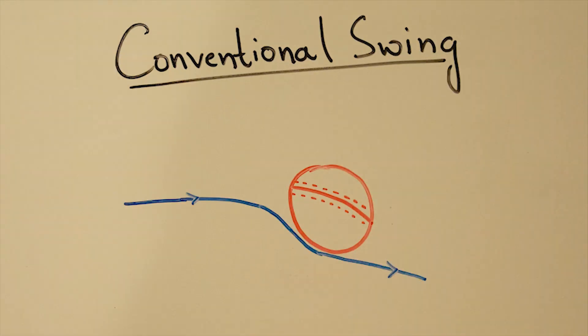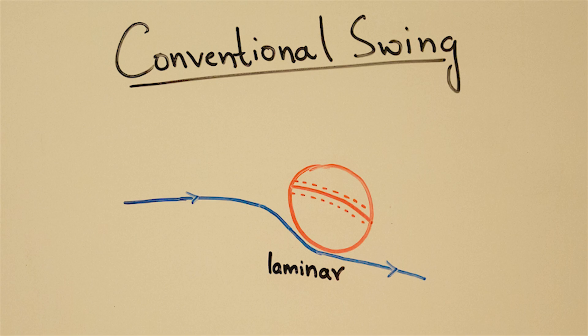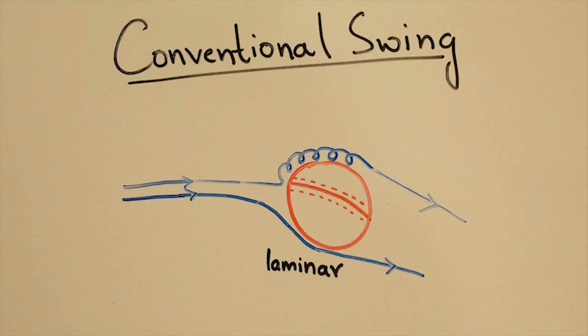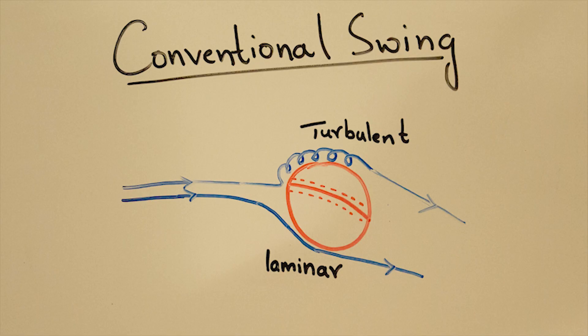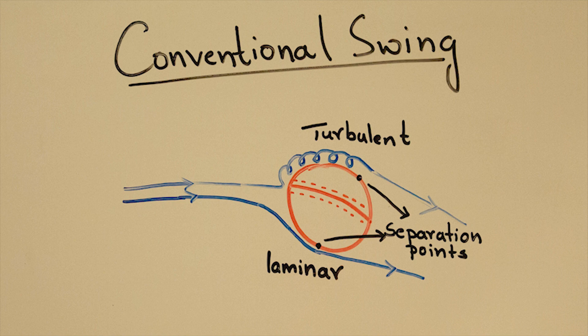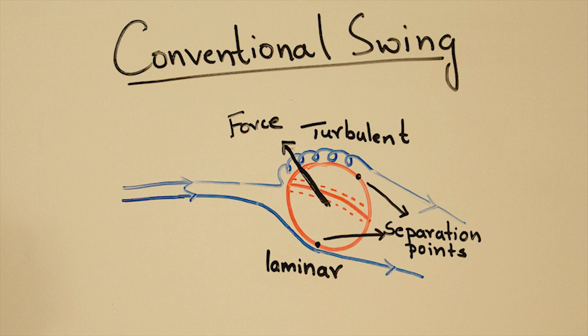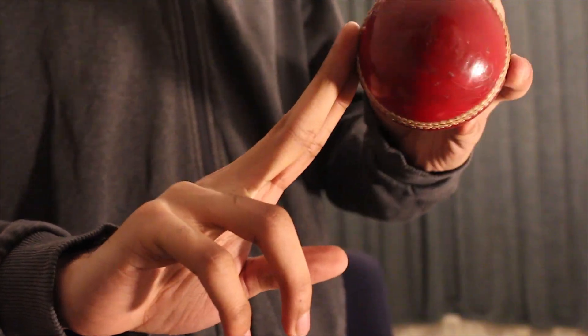As the flow goes over the seam, it becomes turbulent. A turbulent boundary layer has more energy, which means it stays attached to the surface for longer, whereas a laminar boundary layer separates earlier. Due to this variation in the separation points, an imbalance in force is created which makes the ball move in the direction of the seam. Another important fact: a wobbly seam is not conducive to swing bowling, which is why good bowlers always impart the right amount of backspin to keep the seam straight.